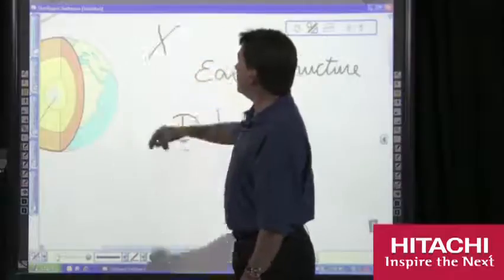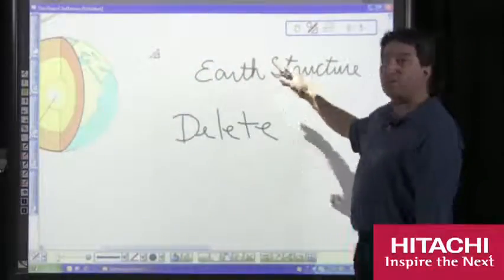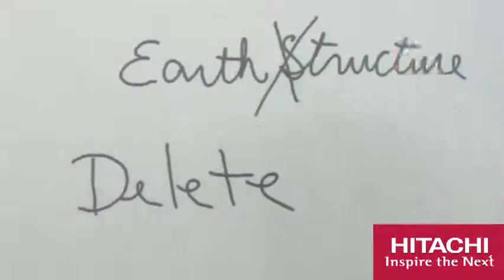Simply by putting the letter X, it will actually work as a strikeout. So for example, if I choose to get rid of the word earth structure, by simply putting the letter X, it will remove it.